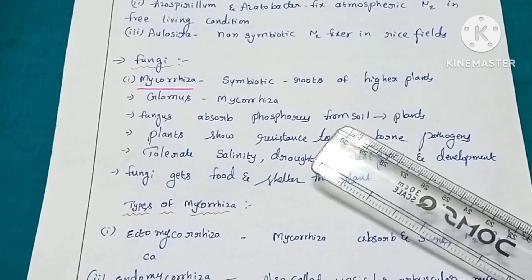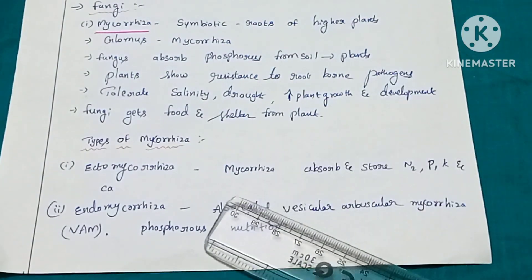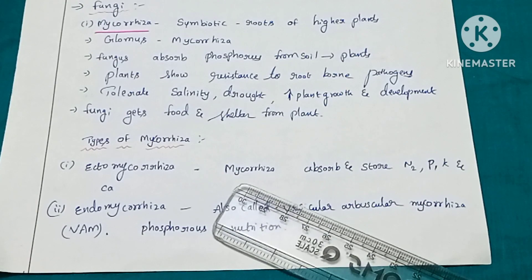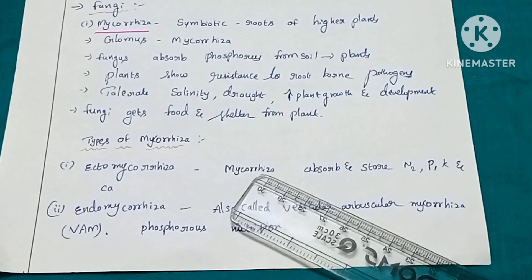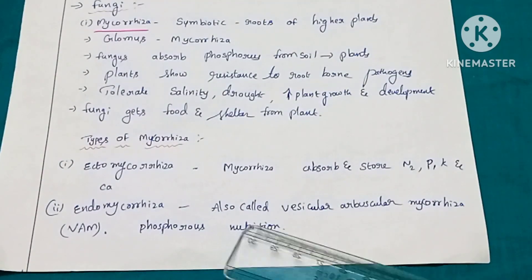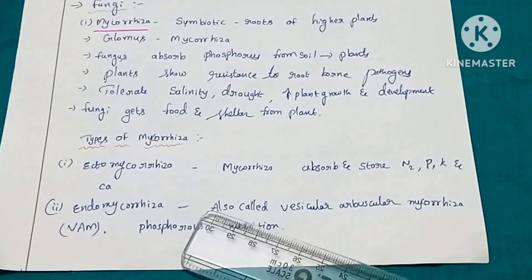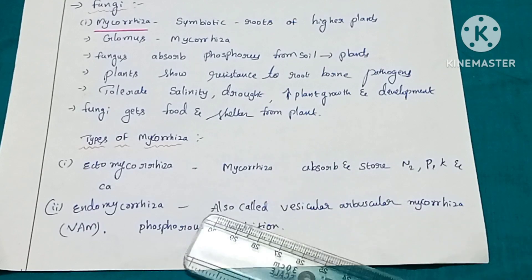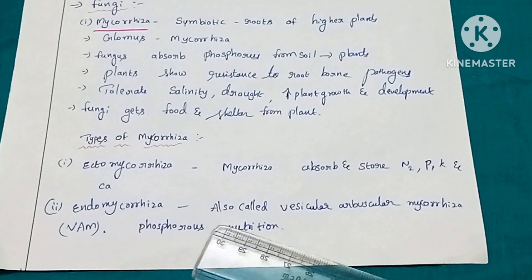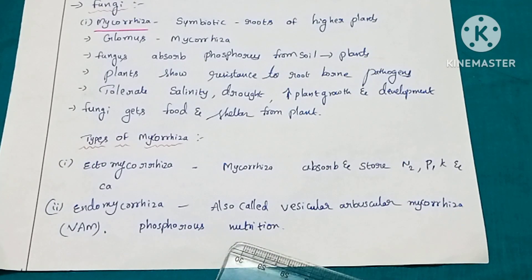Mycorrhizae are of two types: ectomycorrhizae and endomycorrhizae. In ectomycorrhizae, the fungi do not deeply penetrate inside the cortex; they absorb and store nitrogen, phosphorus, potassium, and calcium into the root system. Endomycorrhizae penetrate deeply inside the root system up to the cortical regions; these are also called vesicular arbuscular mycorrhizae, or VAM fungi. VAM fungi fix phosphorus nutrients in the root system.